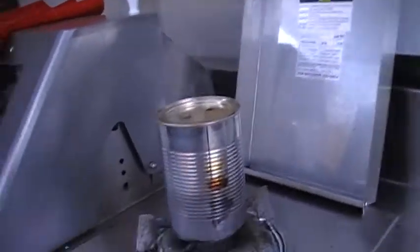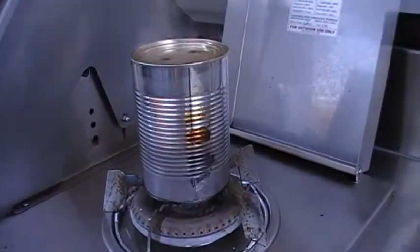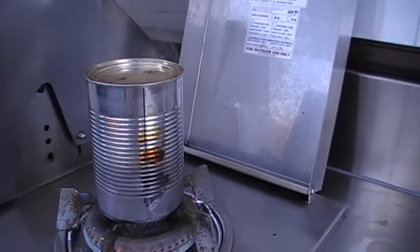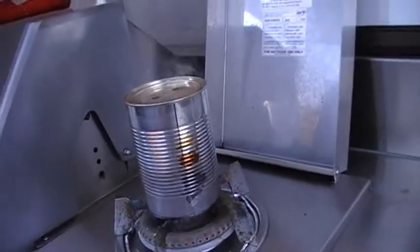So here's the method. Basically you get a big tin, a big silver tin - doesn't have to be silver, just a big tin like Milo or old coffee. Get all the contents out and make sure you wash it out.